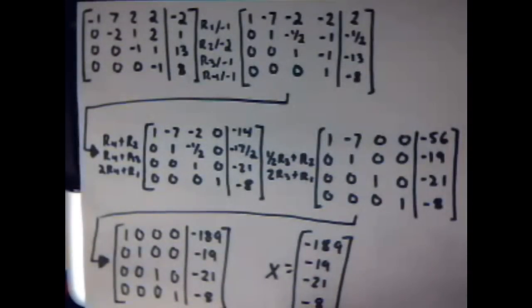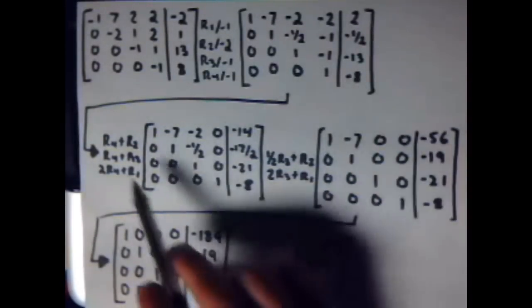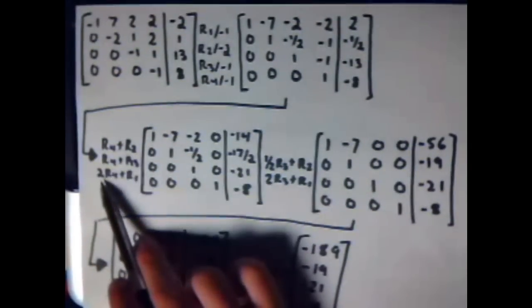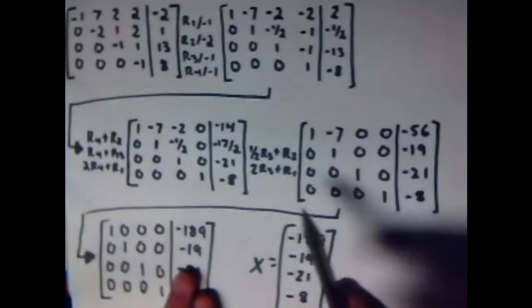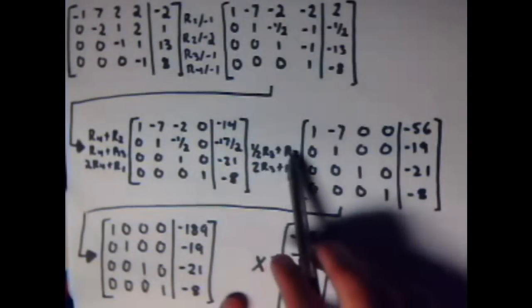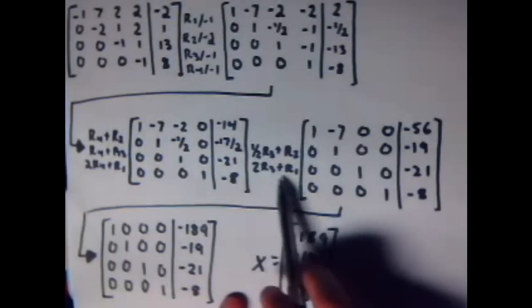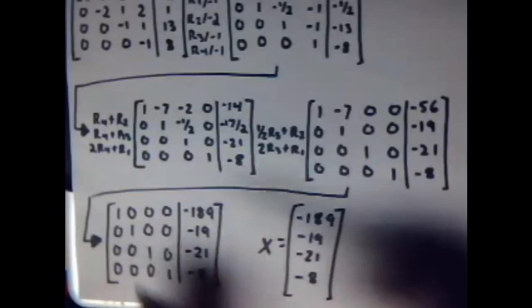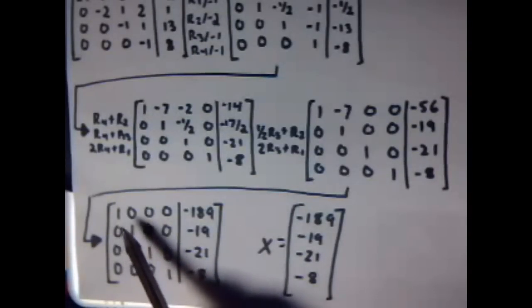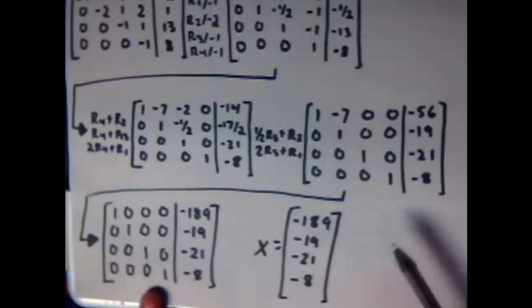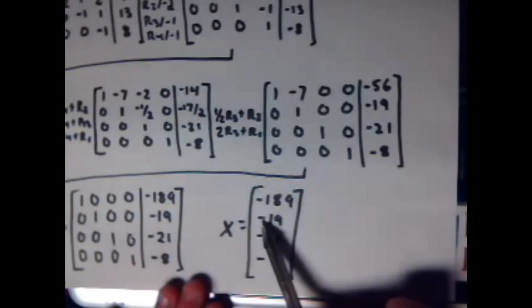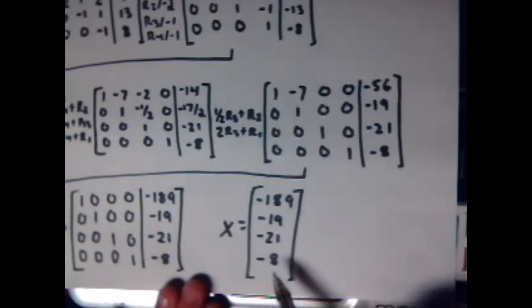And just kind of swap some signs real quick. Here, I decided to do row 4 plus row 2, row 4 plus row 3, and 2 row 4 plus row 1. Again, simplify that a little bit. Half row 3 plus row 2, 2 row 3 plus row 1. You can see this. And eventually, after doing row 2 times 7 plus row 1, you get this big number. And you get x as negative 189, negative 19, negative 21, and negative 8.